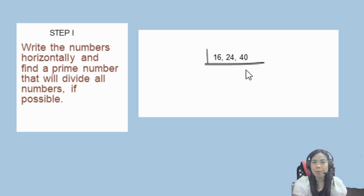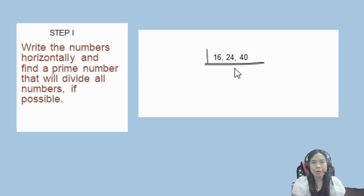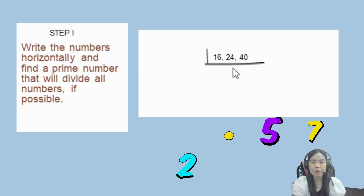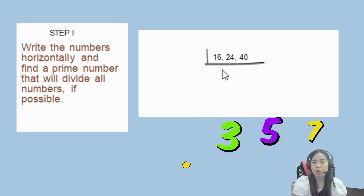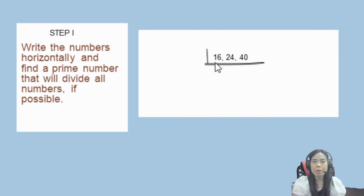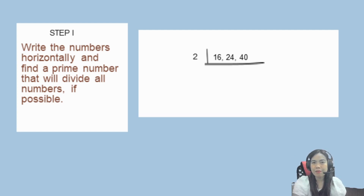Pag sinabi natin prime number, ito yung number na meron lamang na dalawang factor. Pag sinabi natin factors, ito yung numbers that we multiply. For example, ng mga prime number natin: 2, 3, 5, 7. Bakit? Kasi ang kanilang factors lang ay 1 and itself. So, anong prime number na pwede nating i-divide sa 16, 24, and 40? Pwede tayong mag-divide ng 2. So, 16 divided by 2 is equals to 8, 24 divided by 2 is equals to 12, 40 divided by 2 is equals to 20.